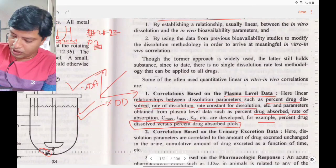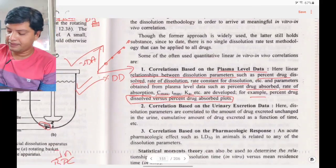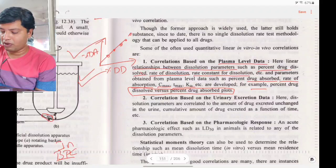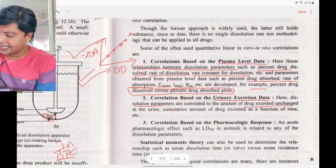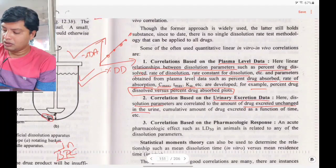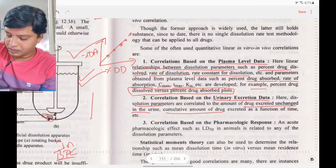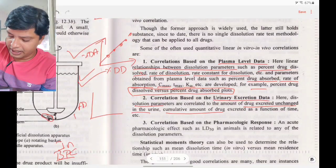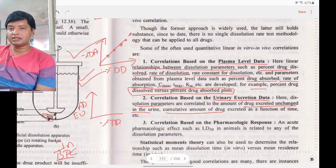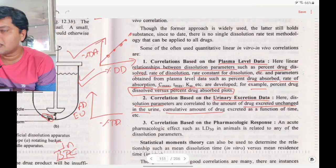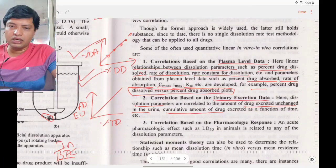Another type of correlation is based on the urinary excretion method: dissolution parameters are correlated with the amount of drug excreted unchanged through urine. Plot cumulative amount of drug excreted in urine on the y-axis and percentage drug dissolved on the x-axis. If this is correlated, in vitro–in vivo correlation is established.